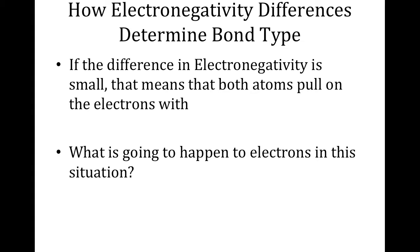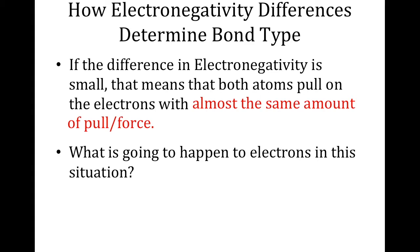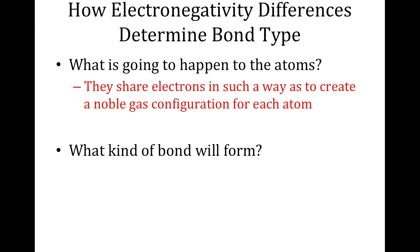If the difference in electronegativity is small, both atoms pull on the electrons with almost the same force. In the tug of war analogy, no one can pull hard enough to win — it's a stalemate. In bonding, the electrons are going to be shared. They share electrons in such a way as to create a noble gas configuration for each atom. If they're sharing, they don't have full custody of the electrons, but jointly, if both include the shared amount, they can each achieve a noble gas configuration. This forms a covalent bond.